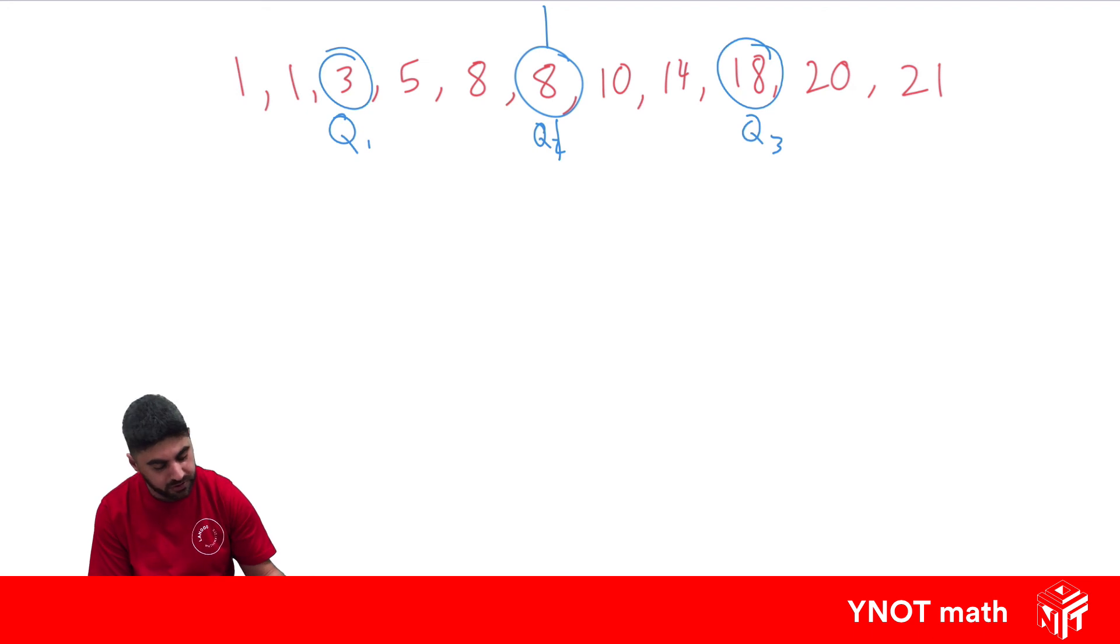And if we want the interquartile range, that's just going to be Q3 minus Q1. We're going to get 18 minus 3, which will give us 15.